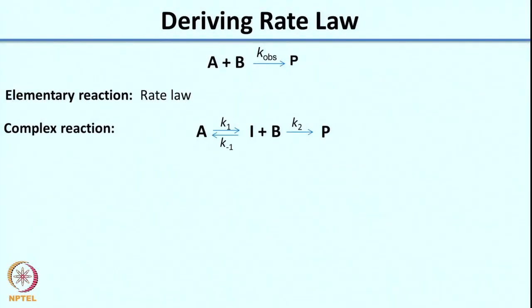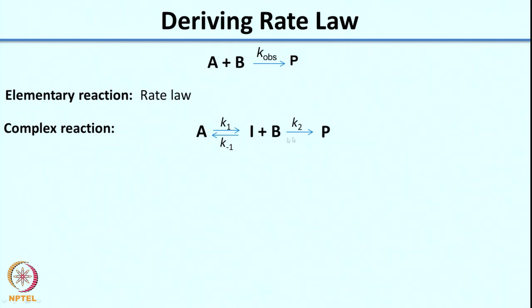Now that you have some idea about reaction kinetics, what we will be doing in the next lecture is looking at how to derive rate laws for more complex reactions. To get you thinking, let us consider a very simple reaction A + B going to P. We will derive the rate laws for the elementary reaction and for various complex reactions representing this transformation — for example, A could go to an intermediate I which reacts with B to give P. We will look at this in detail in the next class. Thank you.